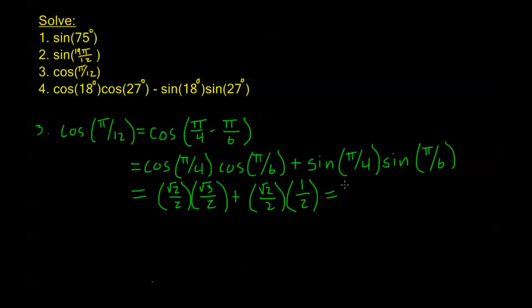So this gives us root 6 plus root 2 over 4. This shouldn't be a big surprise — for sine and cosine we're dealing with similar reference numbers. With π over 12 our reference number is π over 12, and here it's 7π over 12. We know that sine and cosine have symmetry over the line y equals x, so we get the same values for sine as for cosine at reflected angles.